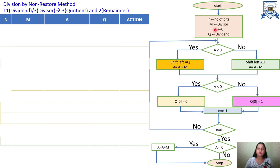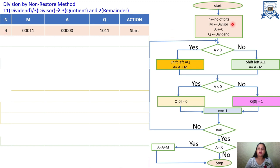In the first step, N holds the number of bits. Convert 11 to binary: it is 1011, which has 4 bits, so N = 4. Next, the divisor 3 is placed in register M. In binary, 3 is 11, but we write it in N+1 = 5-bit register size, so M = 00011. Register A is initialized to 0, written as 00000 in 5 bits. This completes the initialization step.